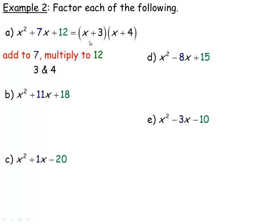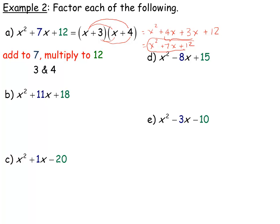You can always check any factoring by expanding to see if you get what you started with. Expanding x plus 3 times x plus 4: x times x is x squared, x times 4 is 4x, 3 times x is 3x, and 3 times 4 is 12. The two middle terms, 4x and 3x, combine to get 7x, and the 12 is on the end. This is exactly the same thing we started with — that's how you check any factoring.